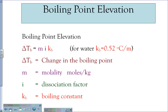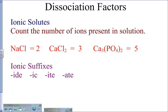To find the elevation of the boiling point, we can use the equation delta Tb equals M·I·Kb, where delta Tb is the change in temperature for the boiling point, M is the molality, again measured as moles of solute divided by kilograms of solution, I is the dissociation factor, and Kb is the boiling constant, which for water is 0.52 degrees Celsius per molal.